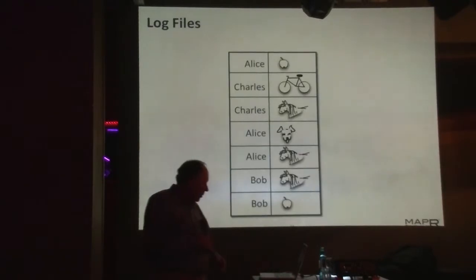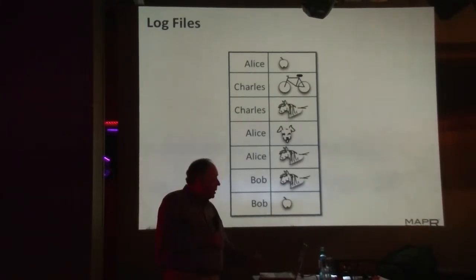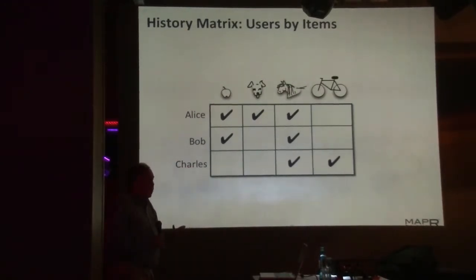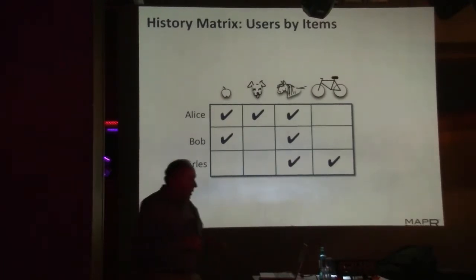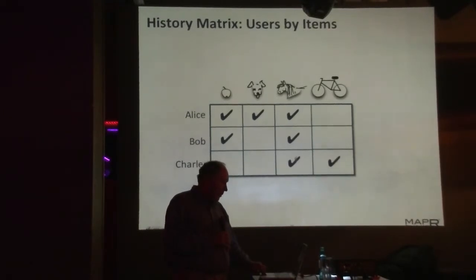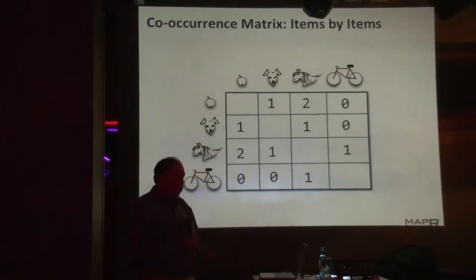This is what it looks like in the computer — a log file with each person and their actions at different times. The next step is to reduce that to a matrix form where we can apply algebraic operations. We can see that apple and puppy co-occurred once with Alice, apple and pony co-occurred twice, and pony and bicycle co-occurred as well. We can see that everybody got the pony. So it's uninteresting that pony co-occurred with apple — if pony occurs everywhere, the fact that it occurred with every apple is completely boring.